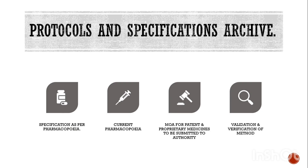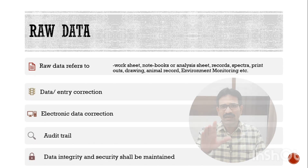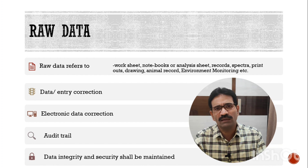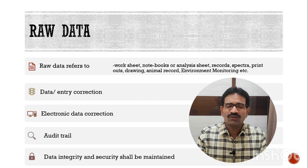Regarding protocols and specifications: your specifications should be in line with the pharmacopoeia — if an amendment comes in the pharmacopoeia, your specifications should be revised in line with the current pharmacopoeia. For patent and proprietary medicines, if you have an in-house method of analysis, you have to submit those methods to the regulatory and licensing authorities. Schedule L1 does not go into much detail on validation or verification of analytical methods, but WHO TRS covers it elaborately.